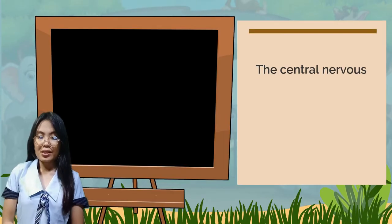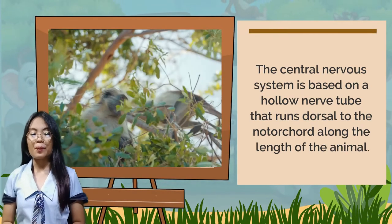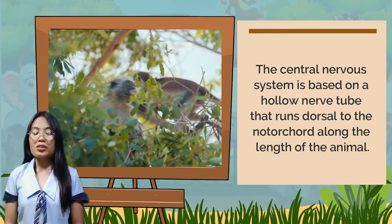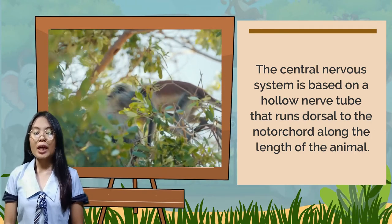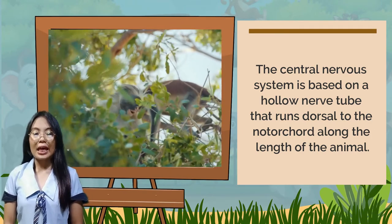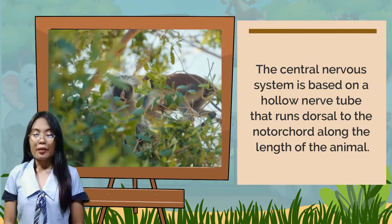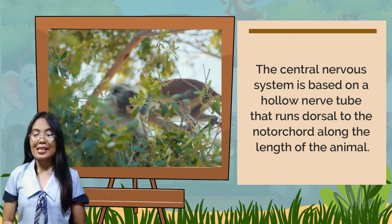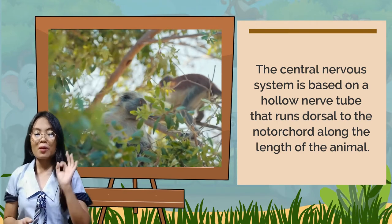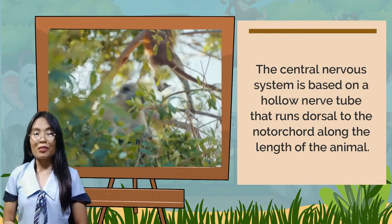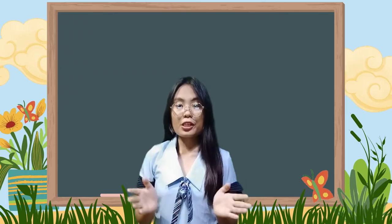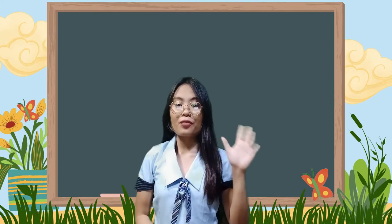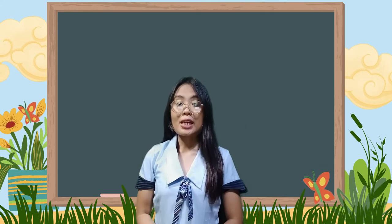In chordates, the central nervous system is based on a hollow nerve tube that runs dorsal to the notochord along the length of the animal. The anterior end of the nerve expands and differentiates into three brain vesicles. Vertebrate animals can be subdivided into five major groups.